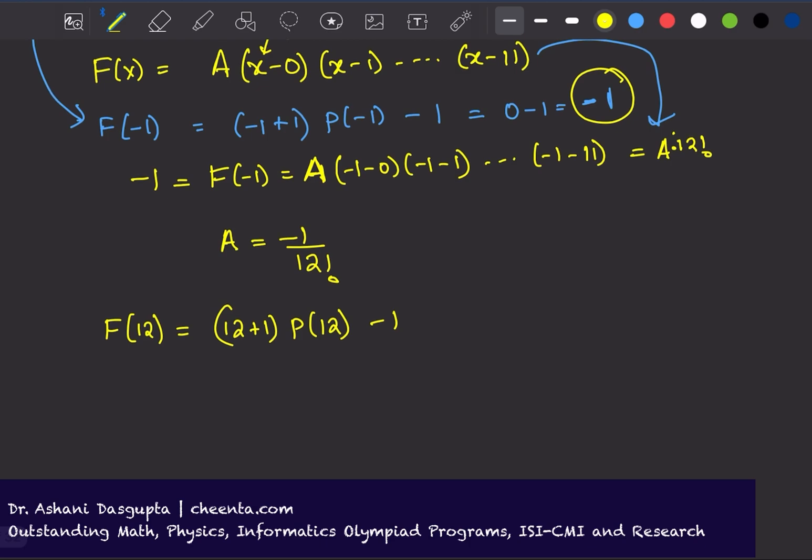I will replace x by 12 here, so I get minus 1 by 12 factorial, which is the value of A, times (12-0)(12-1) up to (12-11).